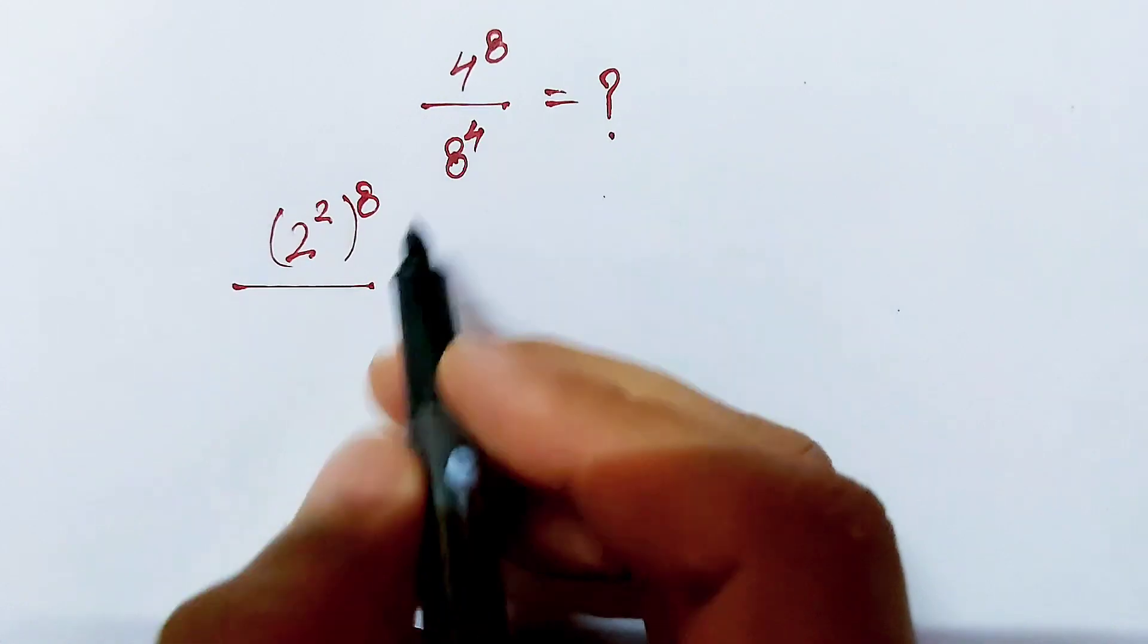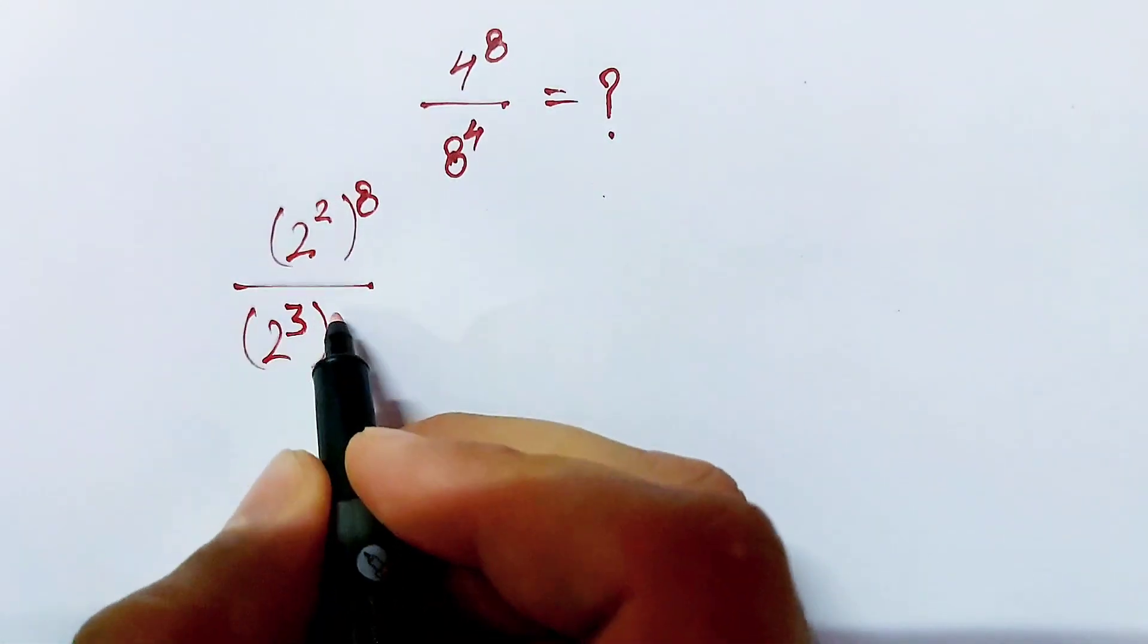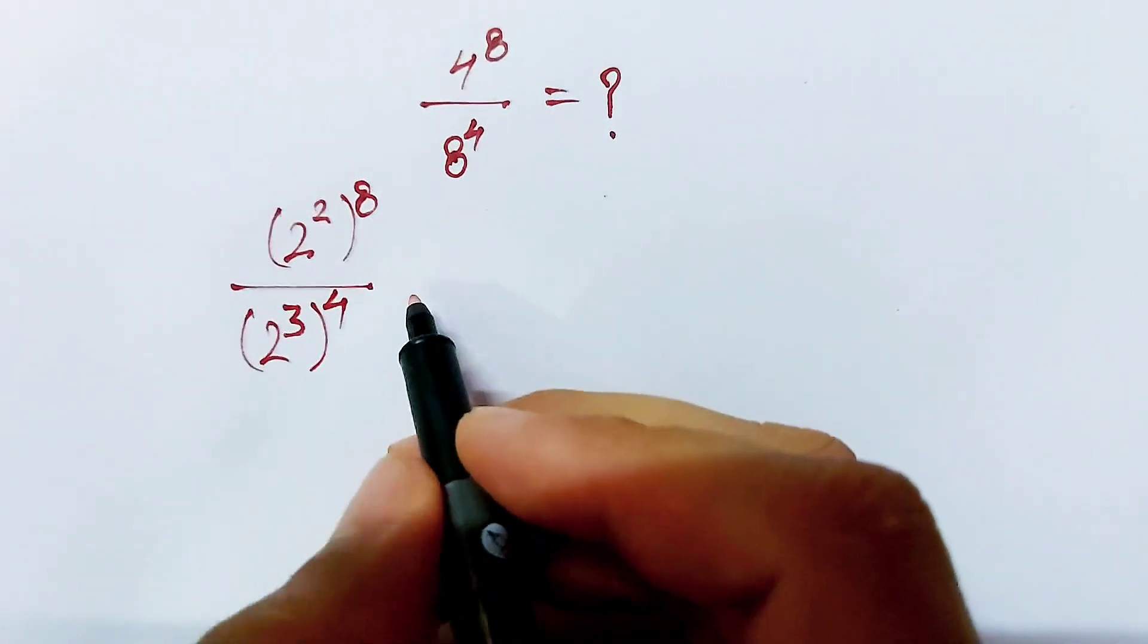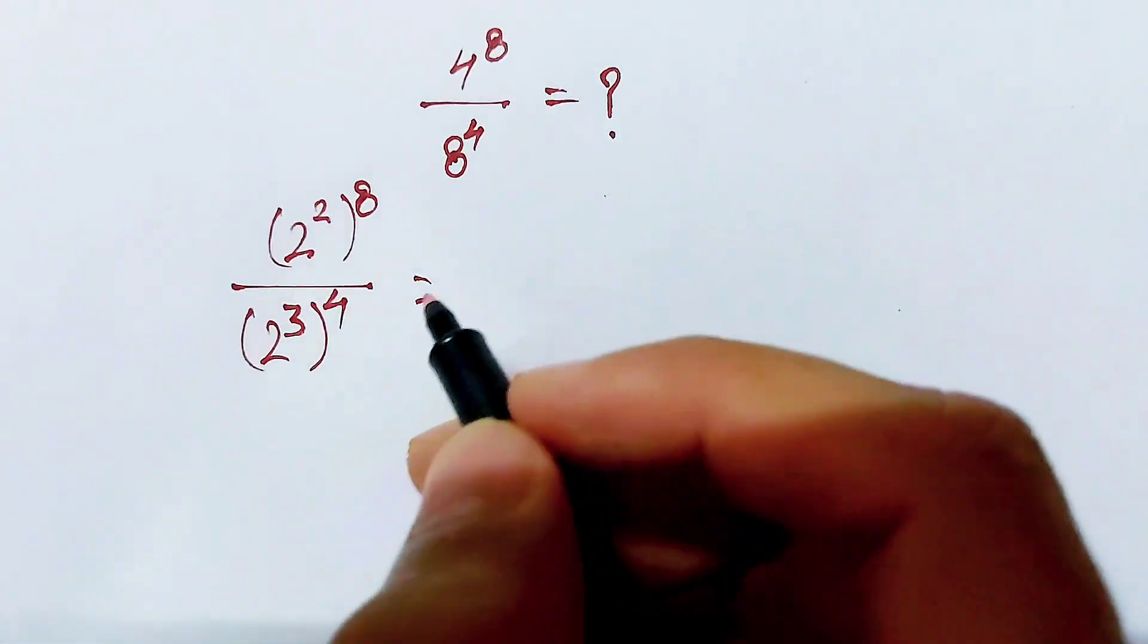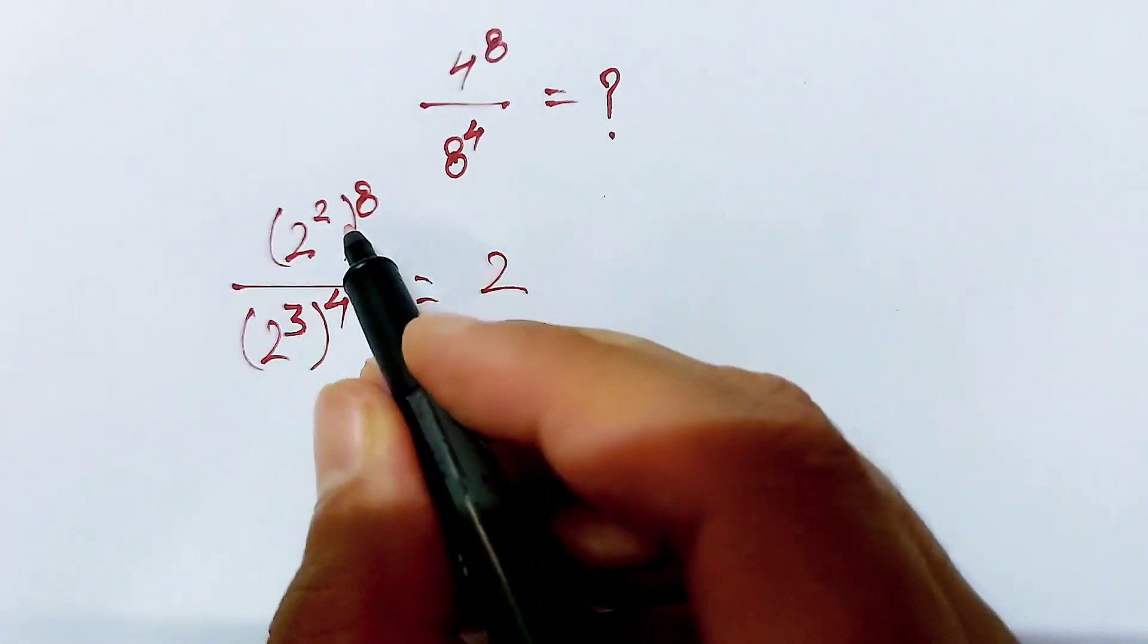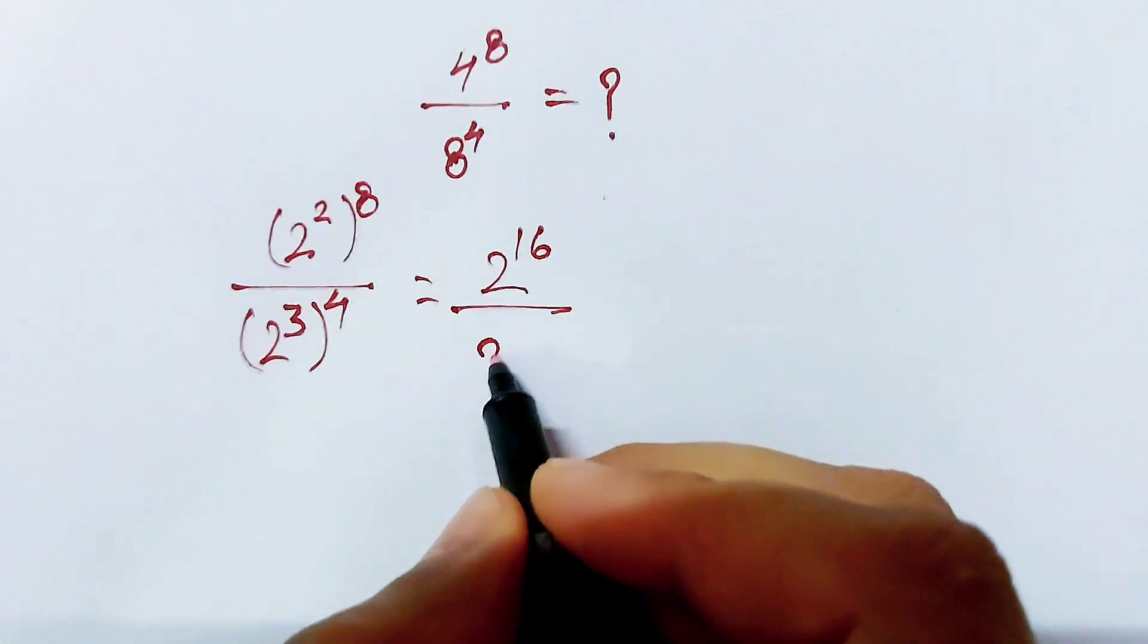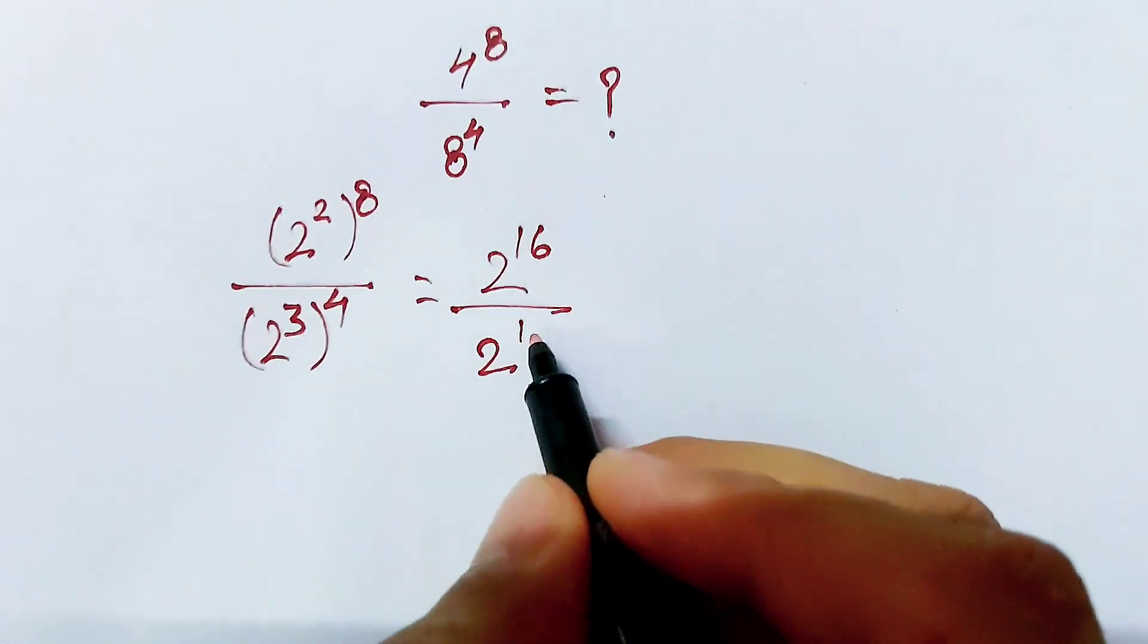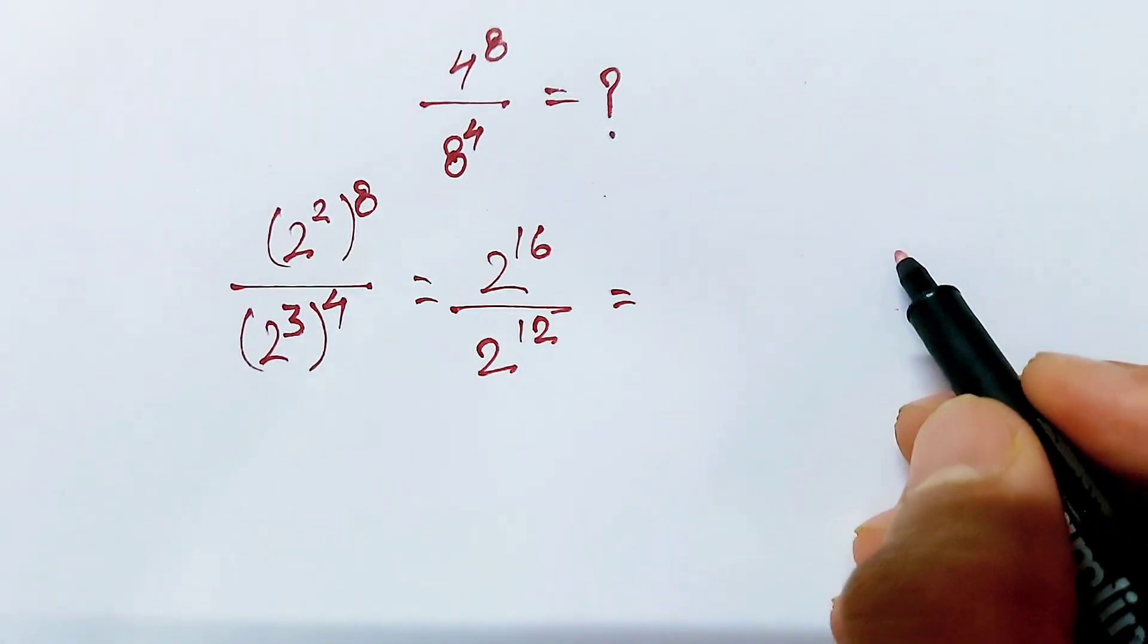And this 8^4 is same as 2^3 and whole power 4. Now this 2 and 8 are in multiplication, so 2 multiplying 8 is 16, and this 3 multiplying 4 equals 12.